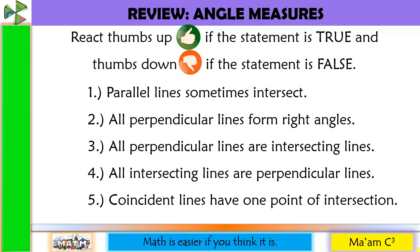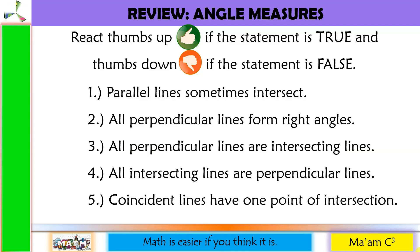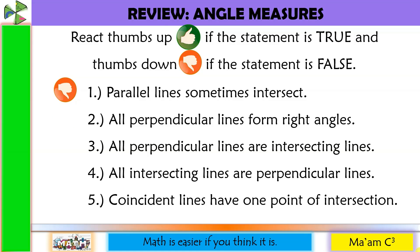Let's have a quick review of our previous lesson. React thumbs up if the statement is true and thumbs down if the statement is false. Number 1: Parallel lines sometimes intersect. This is thumbs down. Number 2: All perpendicular lines form right angles. This is thumbs up.